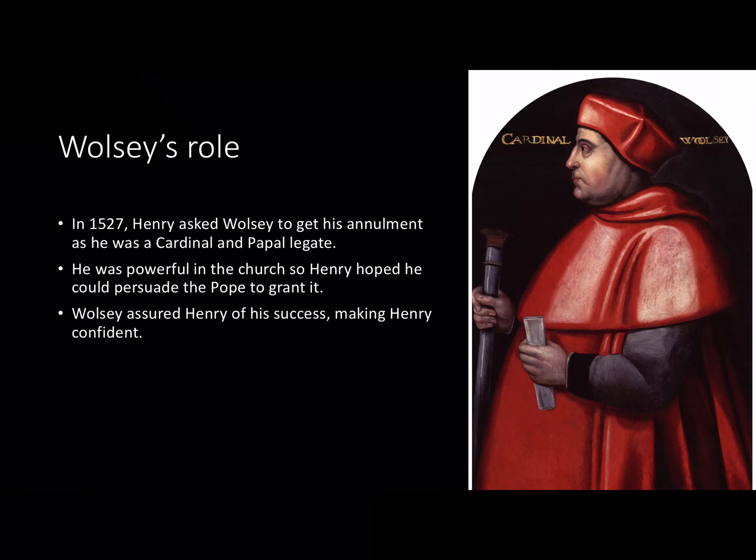So in 1527 Henry tasked Thomas Wolsey with the job of gaining the annulment, as he was a cardinal and a papal legate. As he was so powerful within the church, Henry VIII hoped that Wolsey would be able to persuade the Pope to grant it. Confident about his standing with the Pope, Wolsey assured Henry he would be able to gain his annulment, and this led to Henry thinking that Wolsey would be successful.